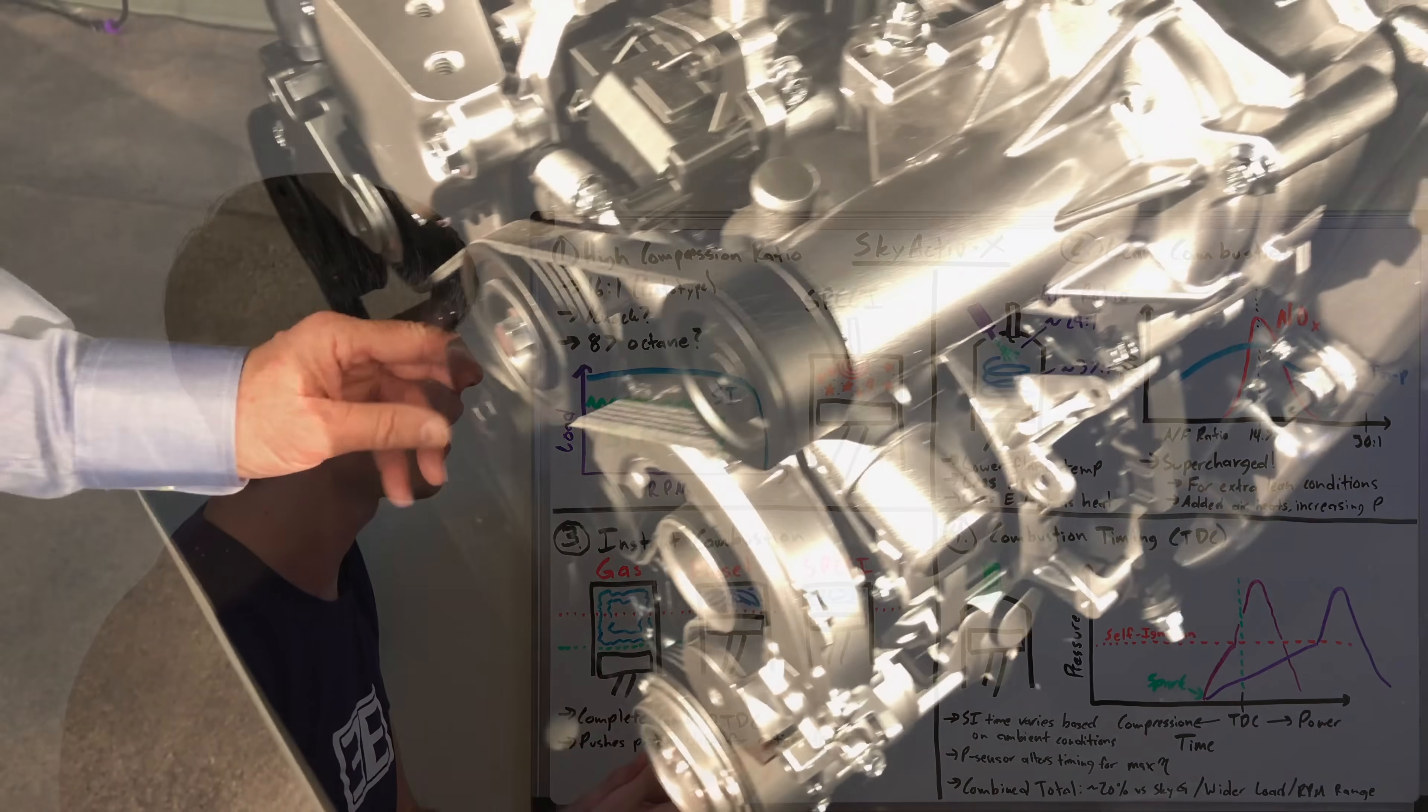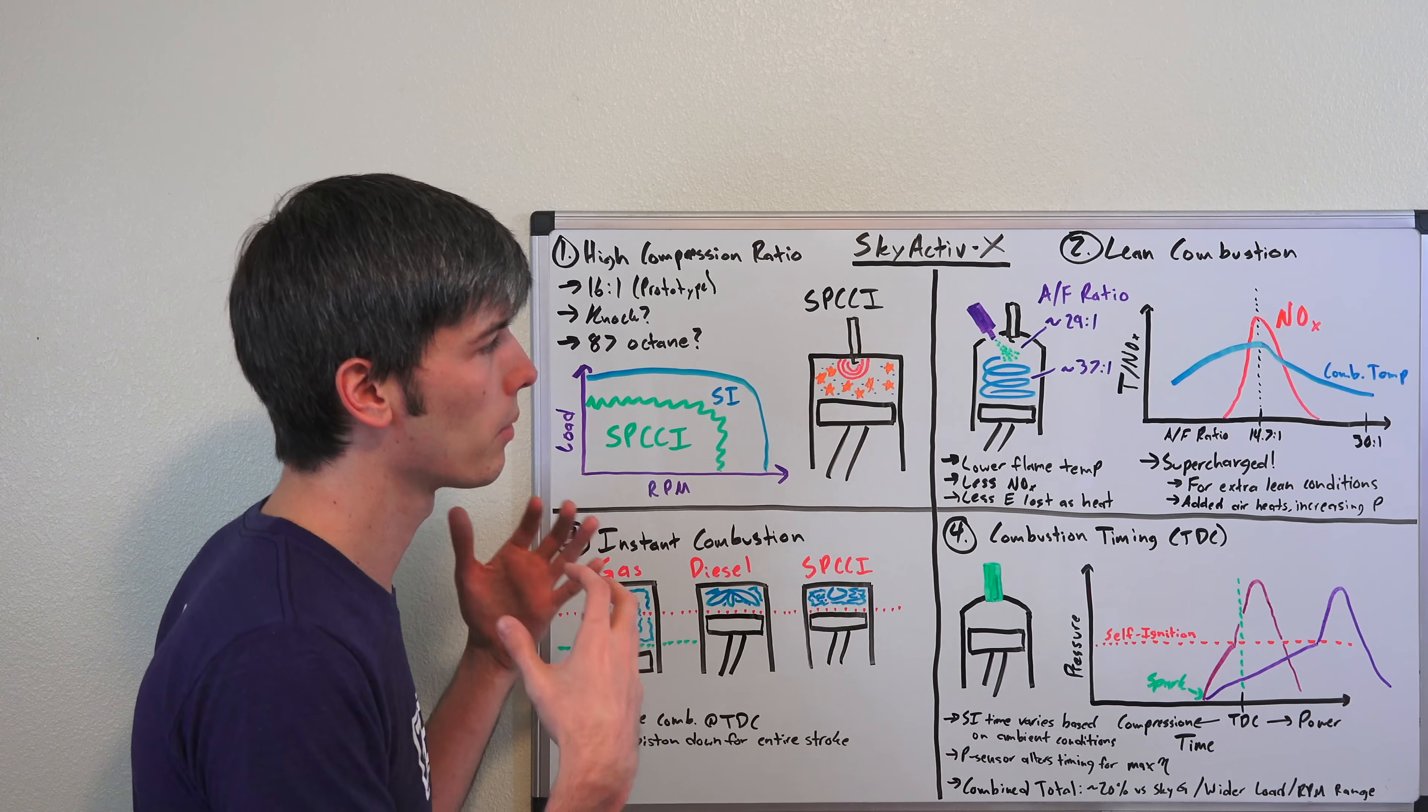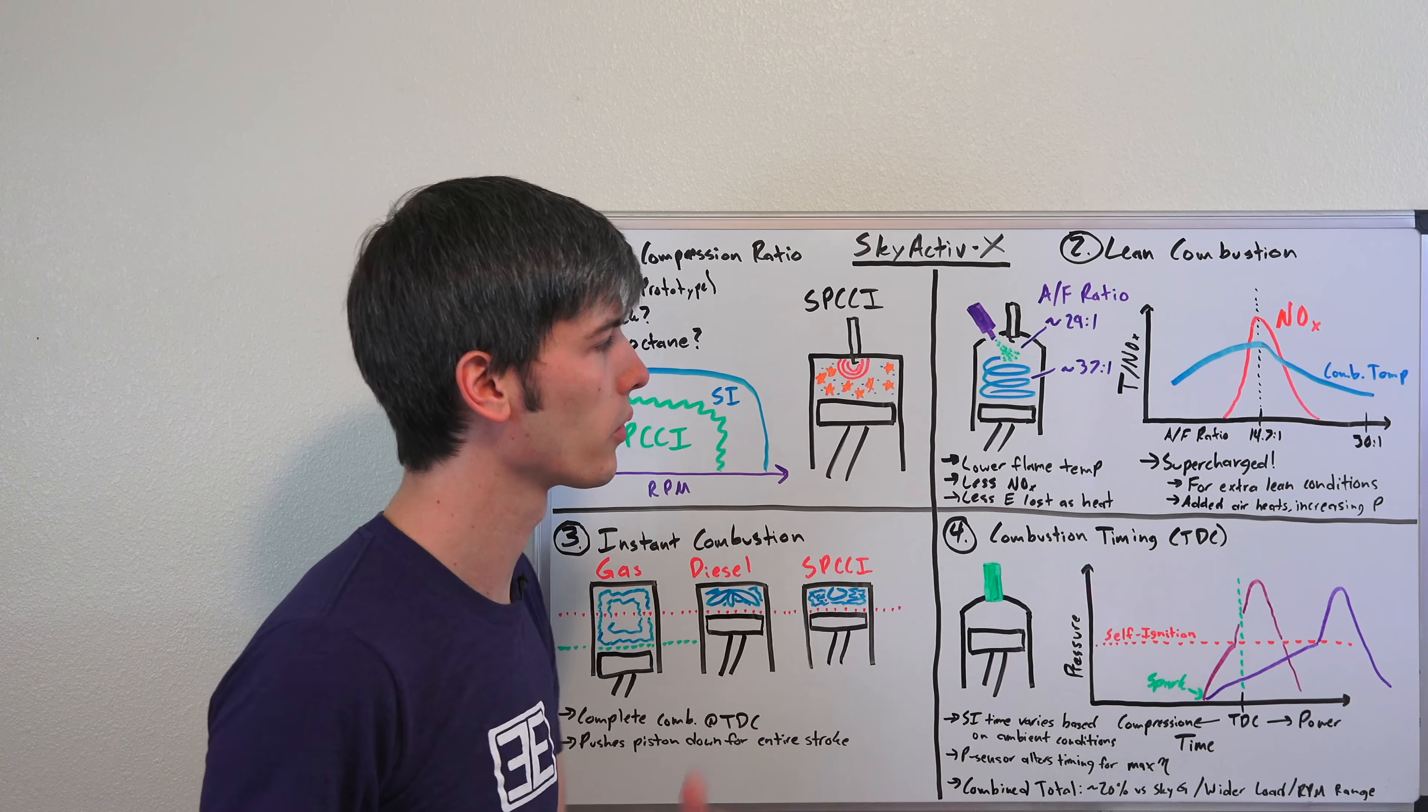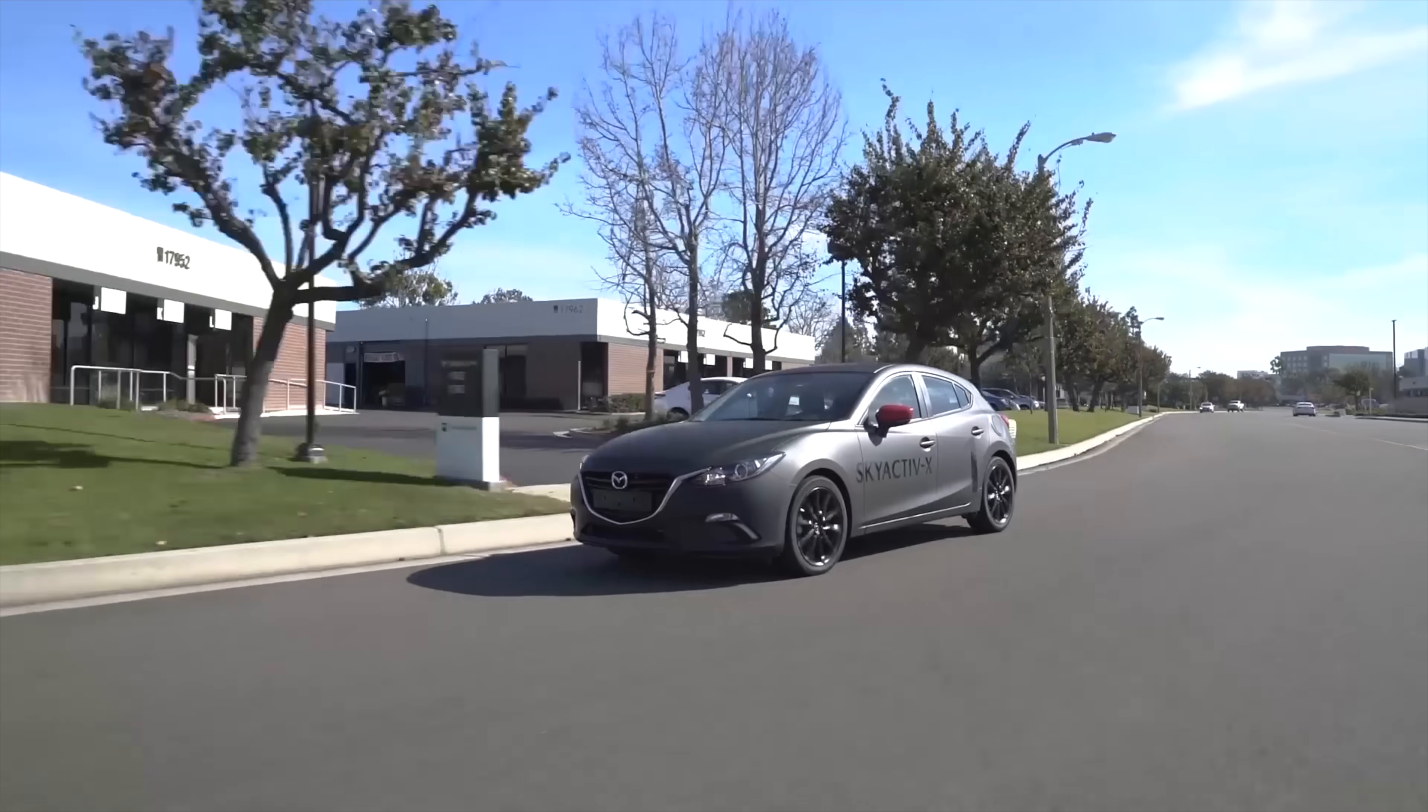This is actually a supercharged engine. Mazda calls it a lean supercharger, and the reason they call it a lean supercharger is because it's not to improve performance. It can improve performance a bit and they do use it slightly for that, but the real reason it's on there is to control the amount of air going into the engine. They want to be able to produce these super lean conditions where you have that air fuel ratio of 37 to 1, and that means a ton of air needs to get packed in there. The benefit of running this lean combustion: you've got less energy lost as heat from those lower combustion temperatures, less nitrous oxide emissions, and because you have extra air in there that extra air heats up during combustion and basically multiplies the effect of increasing the pressure within the combustion chamber. So you're improving the efficiency without necessarily using more fuel.